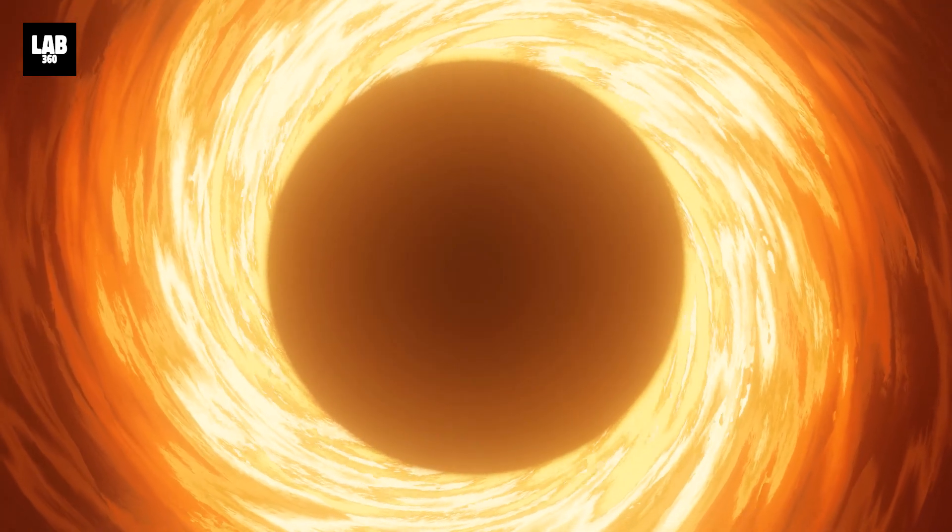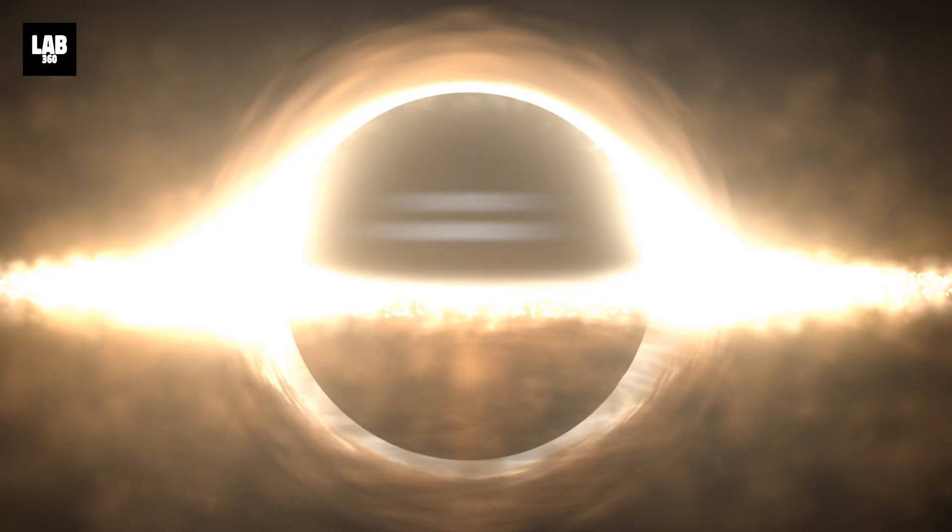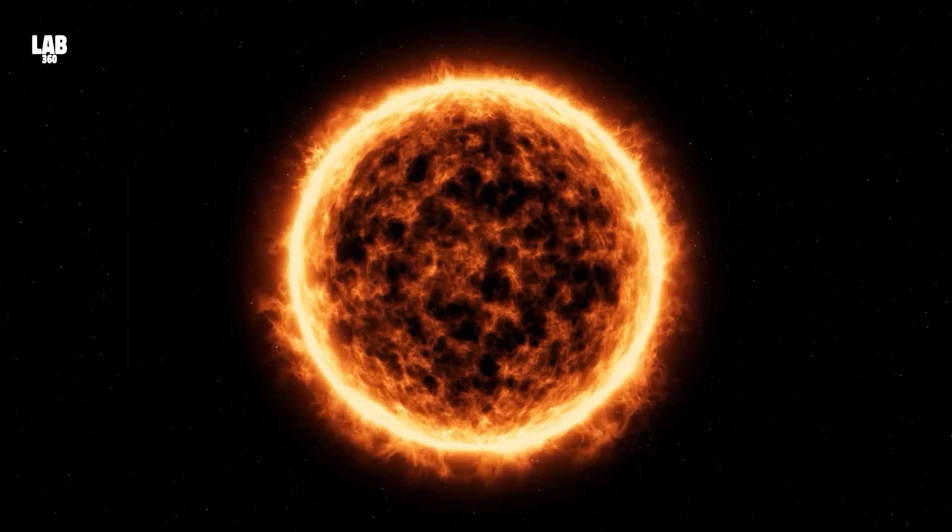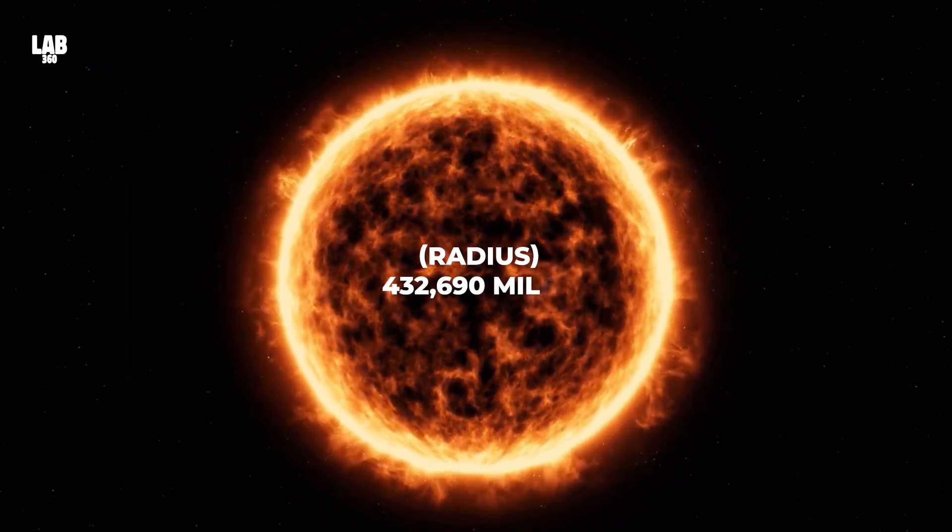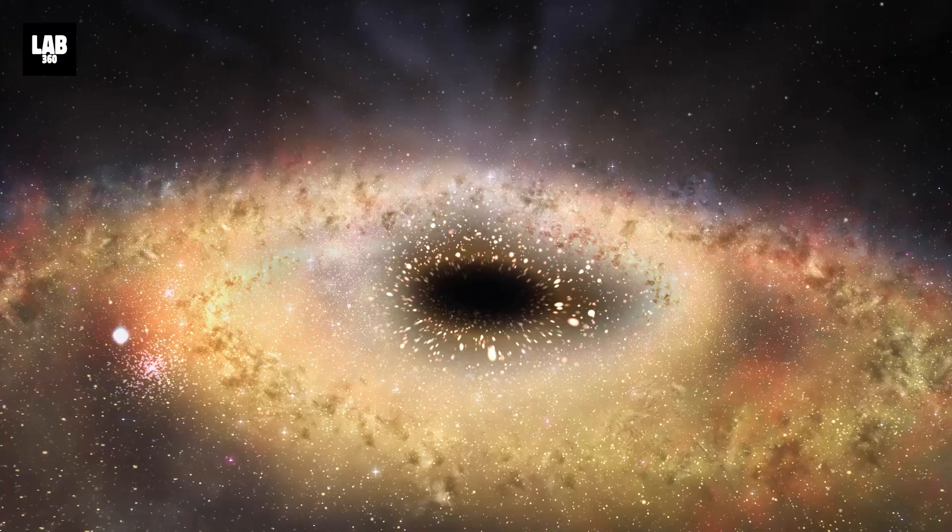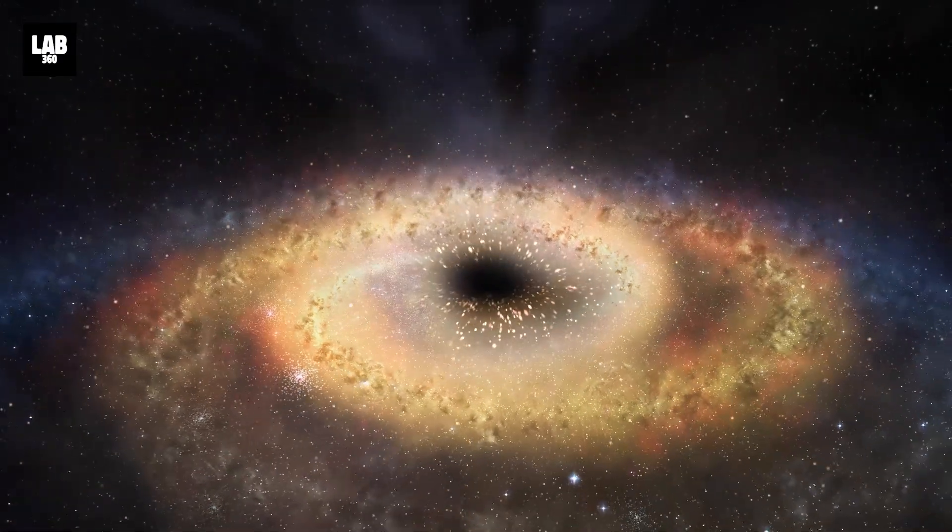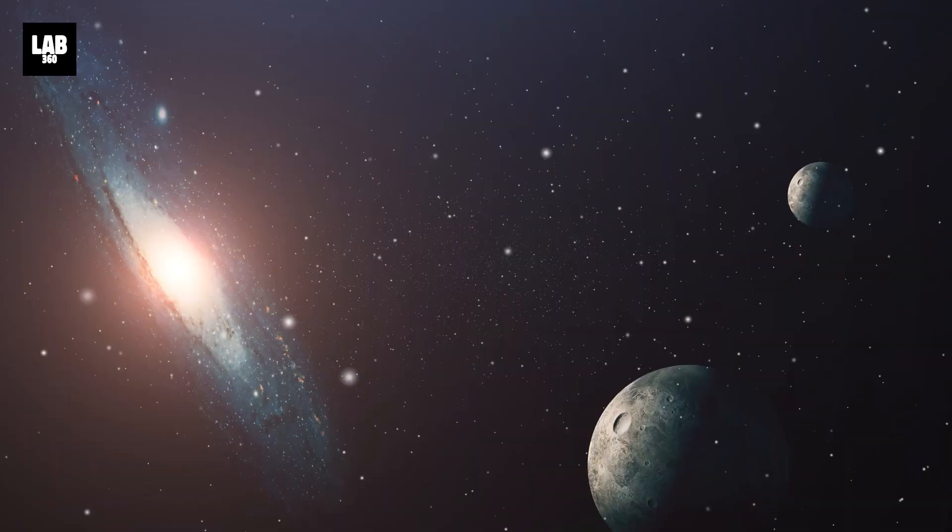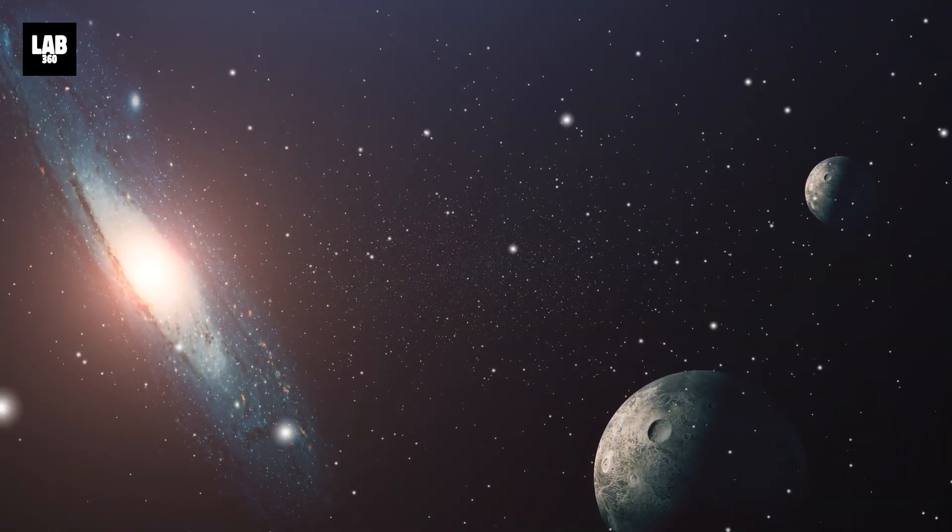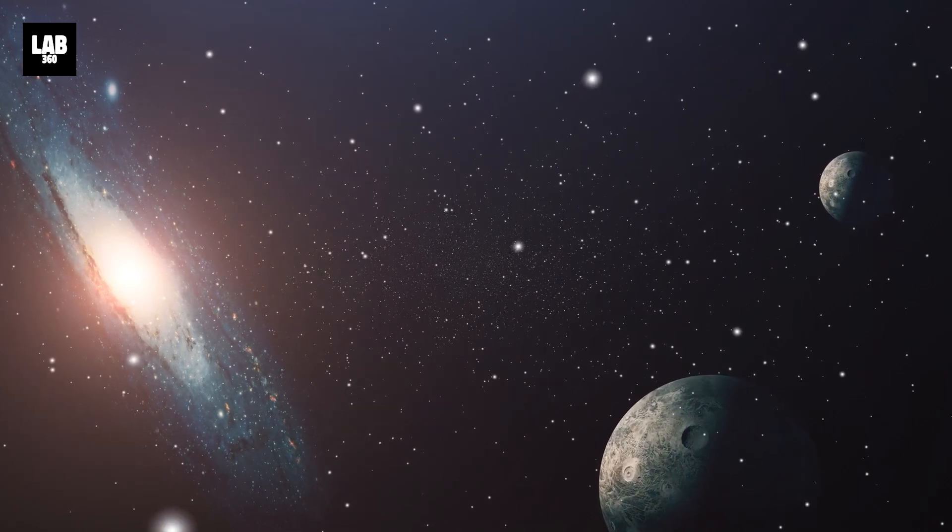If the Sun were to become a black hole, the event horizon would form at a radius of about 1.86 miles, which is much smaller than the current radius of the Sun, about 432,690 miles. This means that the Sun's outer layers would collapse into this tiny point, but the Earth, still in its orbit at a distance of around 93 million miles, would remain well outside the event horizon.